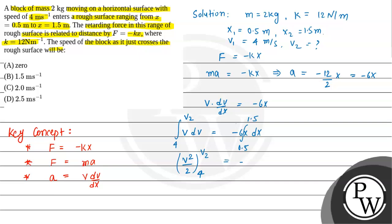And here the limit is from 4 to v2. And then this is minus 6 times x integrated, so it becomes x square divided by 2, and limit is from 0.5 to 1.5. Now we can write this as